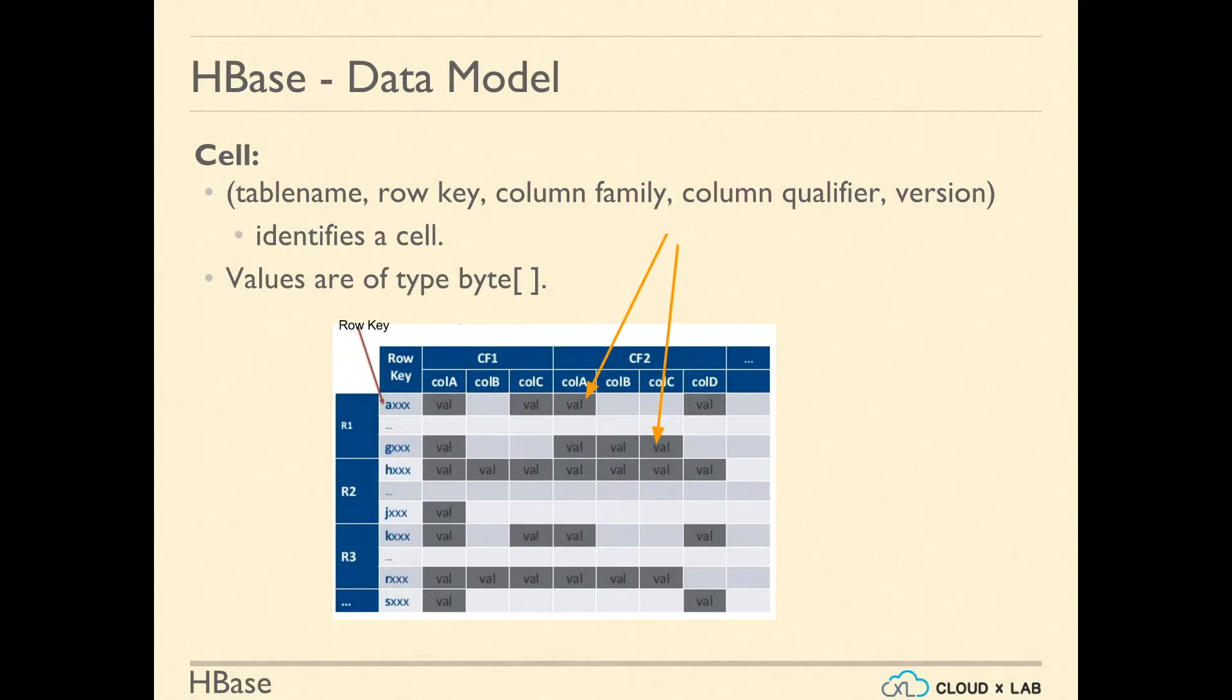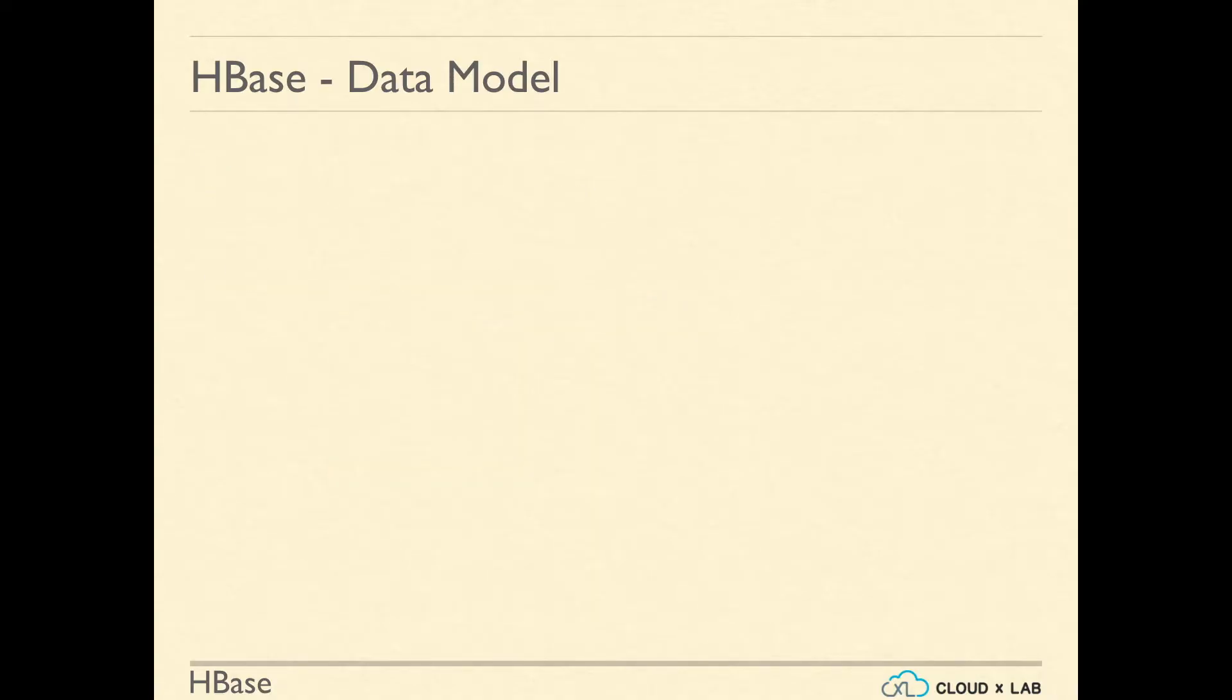Table name, row key, column family, column qualifier and version identify a cell. The values of a cell are of binary data type, meaning each cell can store any kind of data.